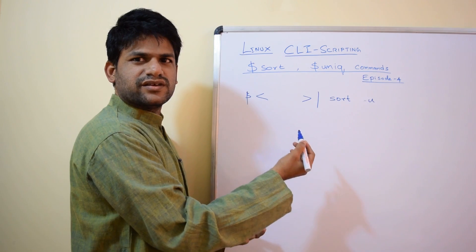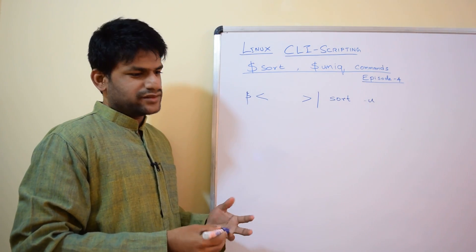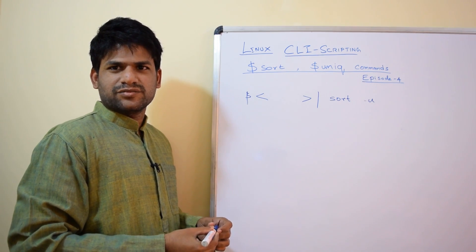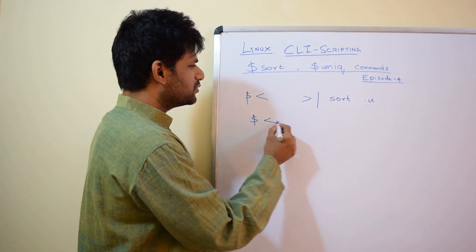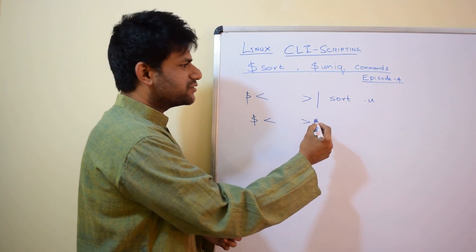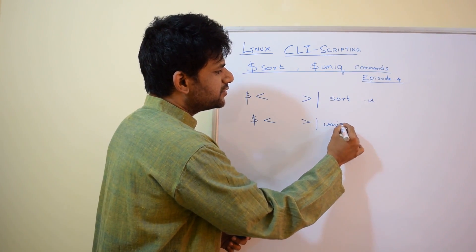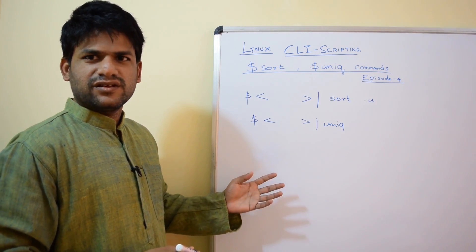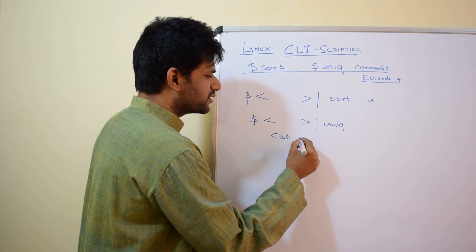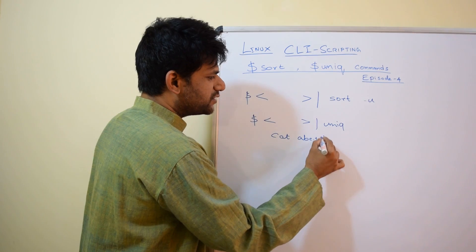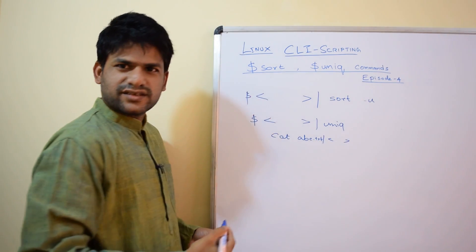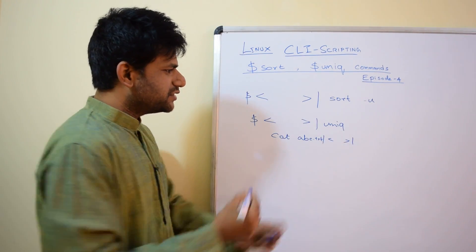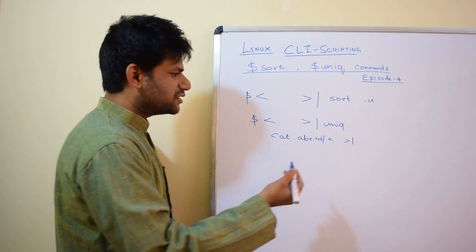If your command output contains multiple subsequent duplicate entries, you can use the uniq command. For example, suppose you have a script like: cat abc.txt, apply your command line filters, and then pipe to uniq.